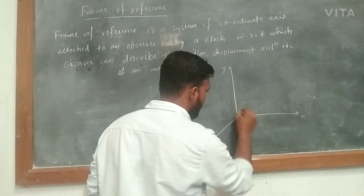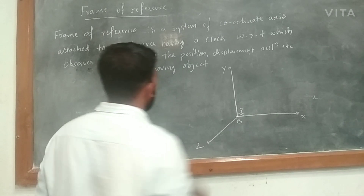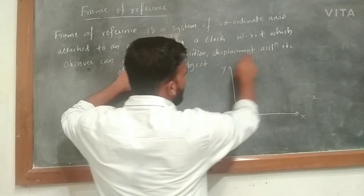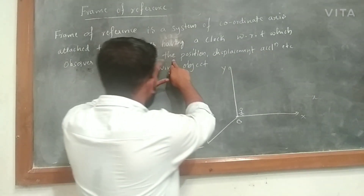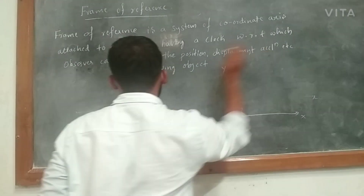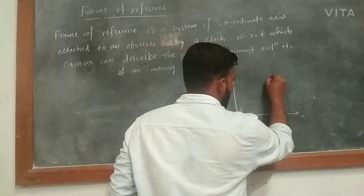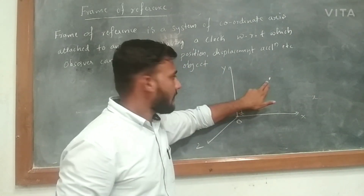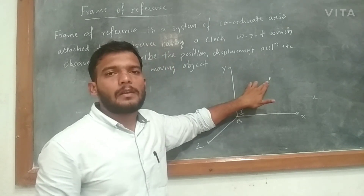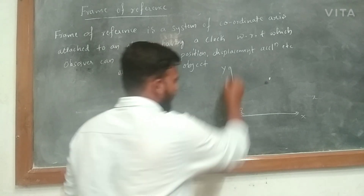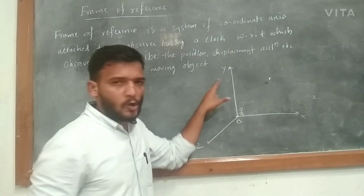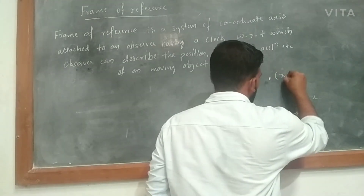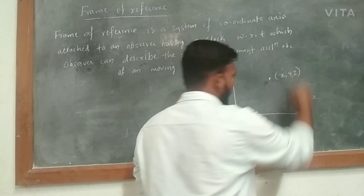Here, at this position, the observer is here. Having a clock with respect to it, the observer can describe the position, displacement, and acceleration of a moving object. This observer can describe the exact position, acceleration, and displacement of the particle. Here, x, y, z are the coordinate points — coordinate axes — and the exact position of this observer is handled using these coordinate points.